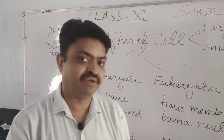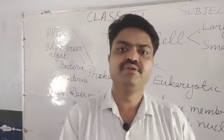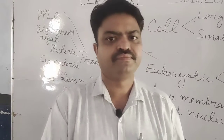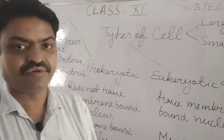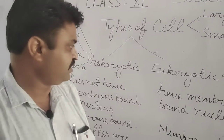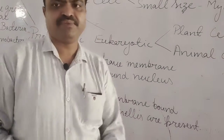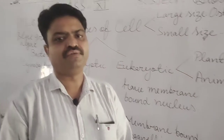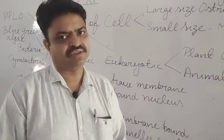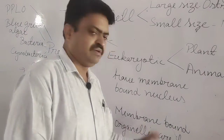What are the membrane-bound organelles? Examples include mitochondria, Golgi body, and vacuoles. These are absent in prokaryotic cells. But eukaryotic cells have membrane-bound organelles — they are present in them.